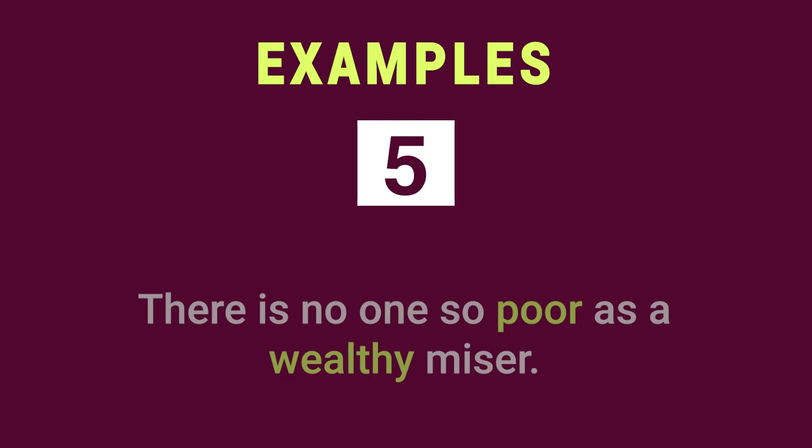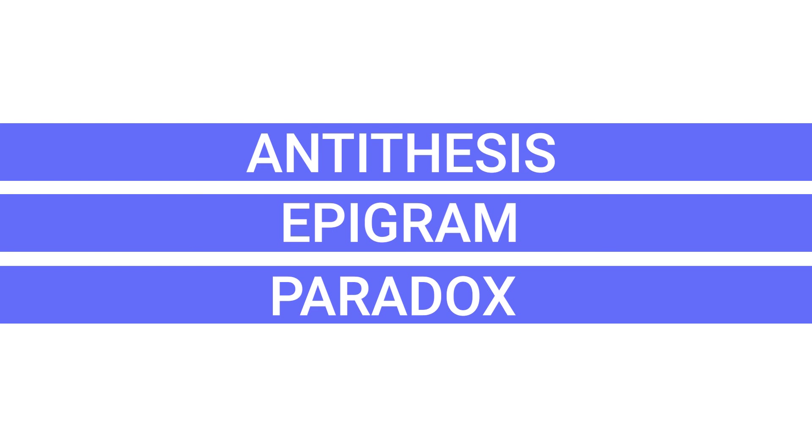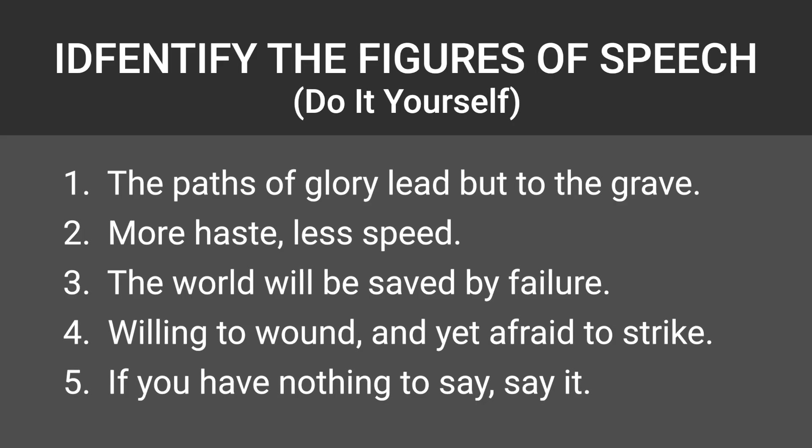Last example: 'There is no one so poor as a wealthy miser.' Poor and wealthy are contrasting words, giving the well-known underlying truth that a miser, though wealthy, is worse off than a poor person. These are examples of paradox, but if you analyze them from the point of view of epigram, there is no harm. We have discussed three figures of speech — antithesis, epigram and paradox — and on screen you will see five sentences from which you have to identify the figure of speech involved. Give me your answers in the comment box, along with any video suggestions. See you soon — take care and happy learning.